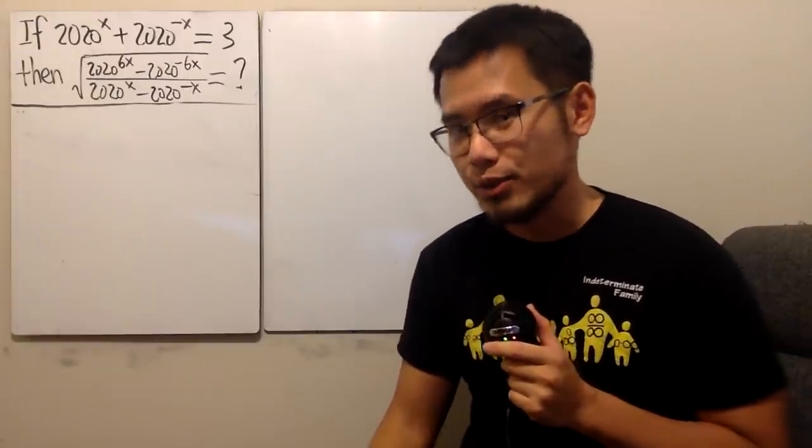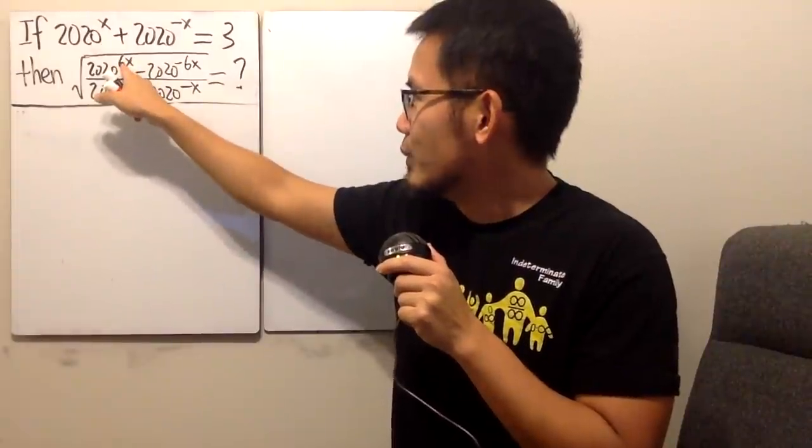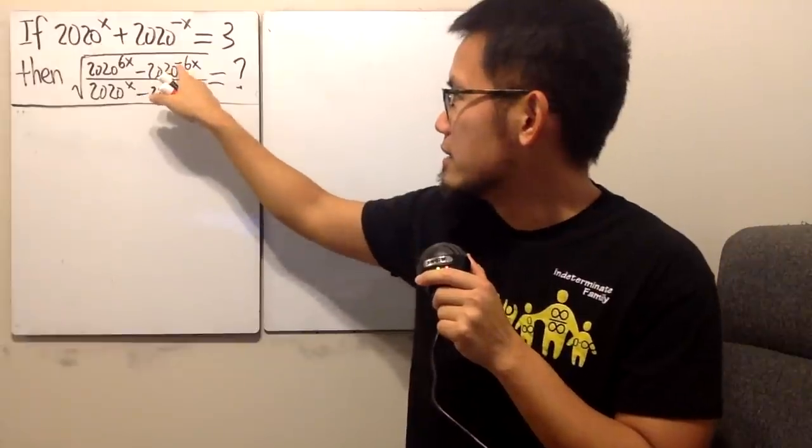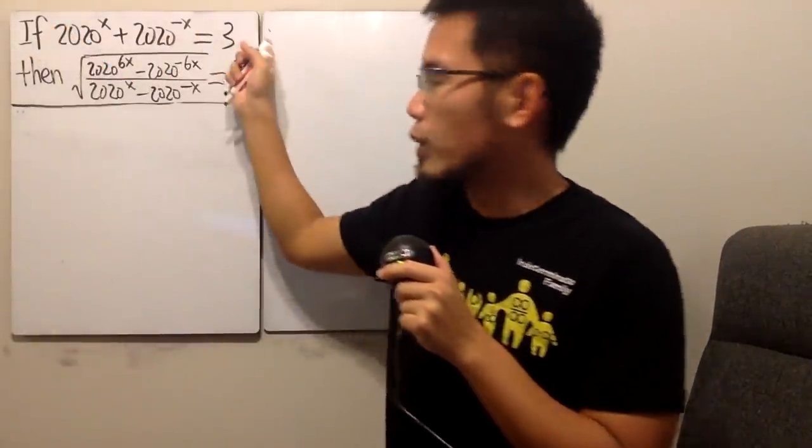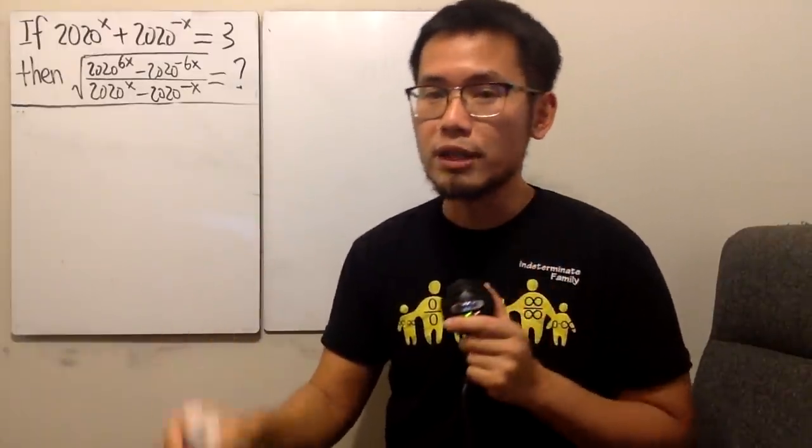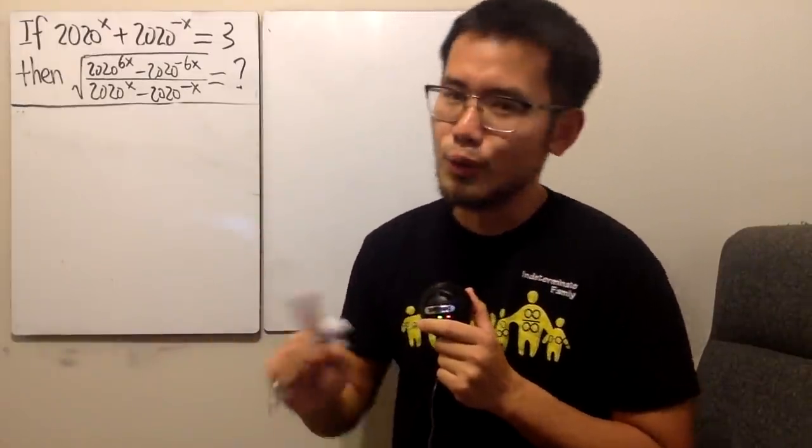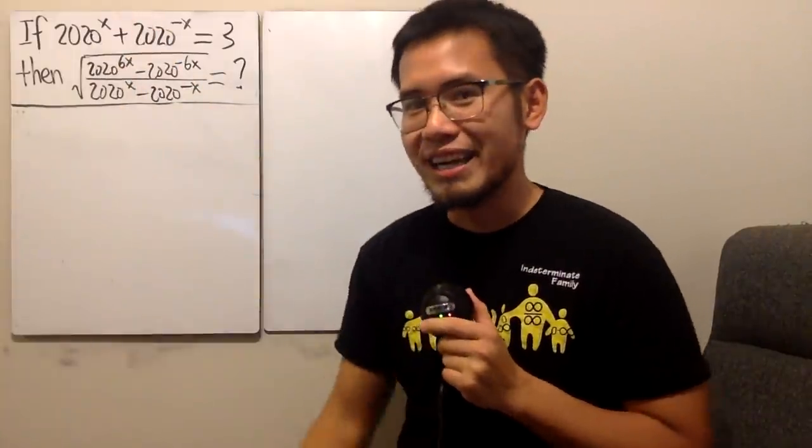All right, hopefully you got a chance to try it. Here we see we have the 6x power and this is negative 6x power. It seems like we should just go back to the original equation and raise both sides to the sixth power. No, don't do that either. That's going to be pretty bad on the left hand side.